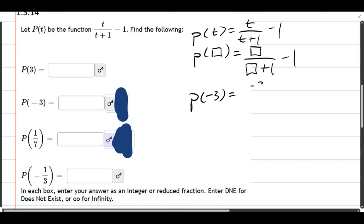Now on the right we have negative 3 divided by negative 3 plus 1 minus 1 outside. All we need to do is simplify this: negative 3 plus 1 is negative 2.